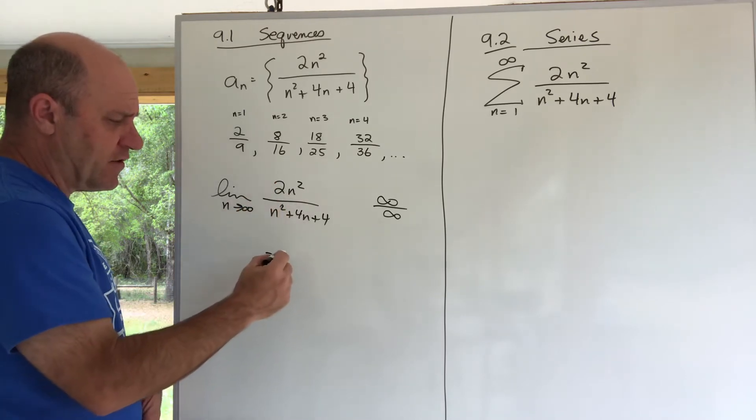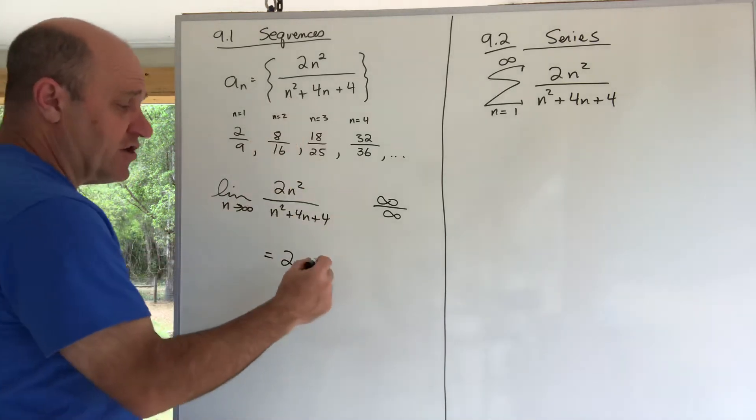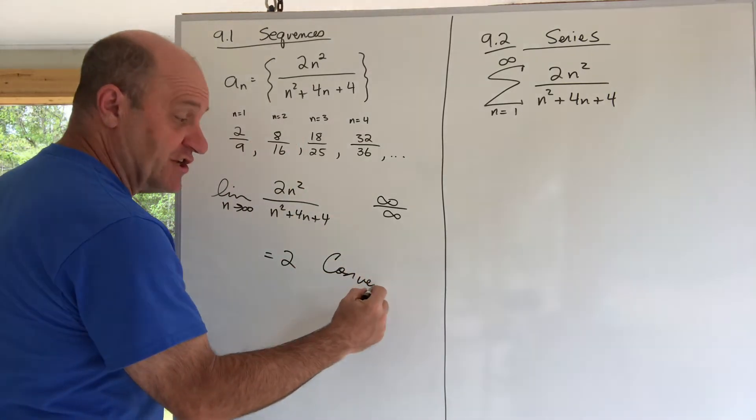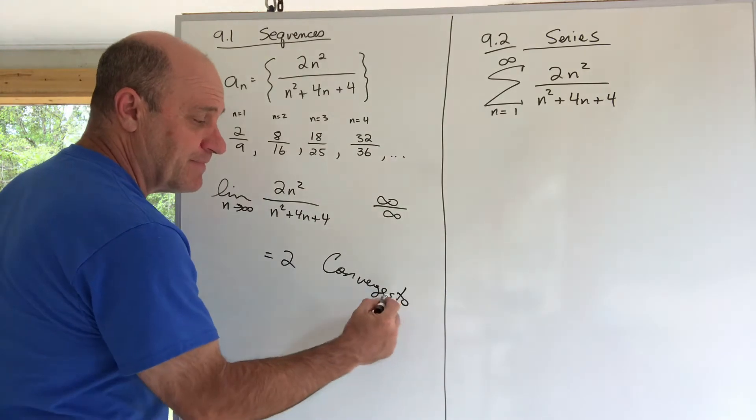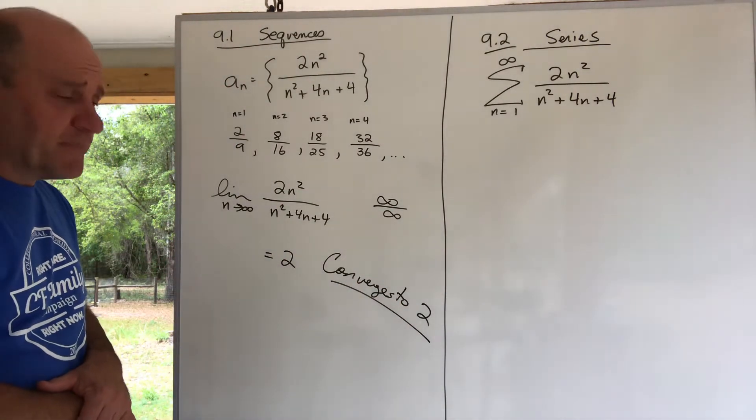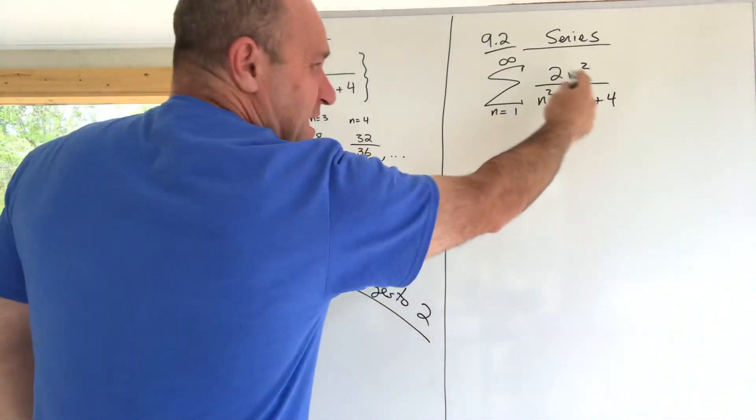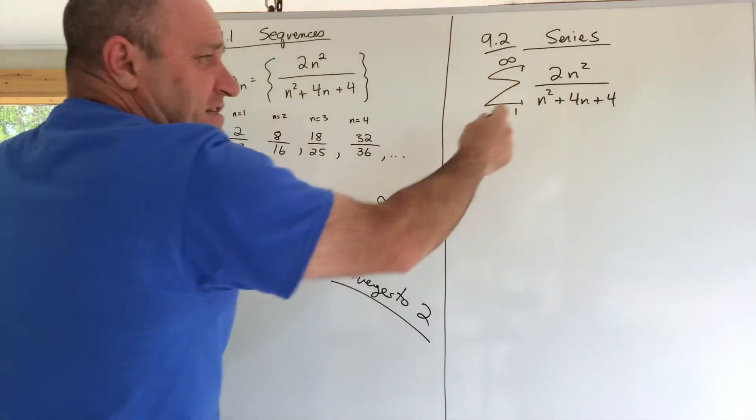So this sequence converges, and it converges to 2. And that's it for sequences. A series is quite a bit more complicated. It's the same nth term, but it's a series.